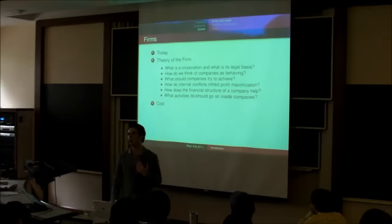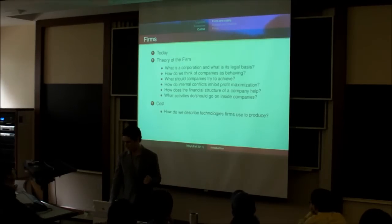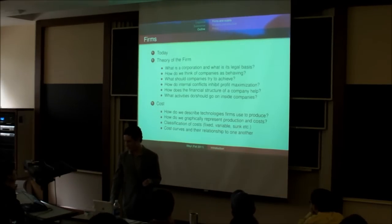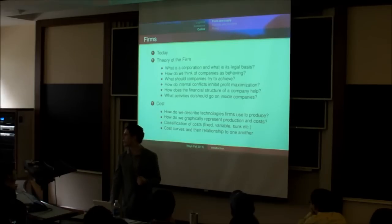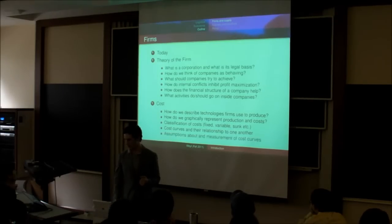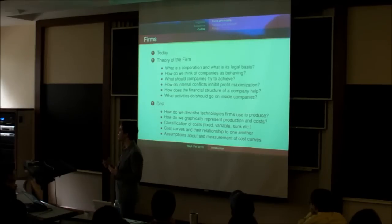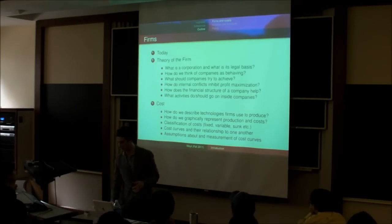We'll think about costs of production. How can we describe these mathematically? How do we graphically represent them? How do we classify them to fixed and variable sunk costs? What are cost curves and how are they related to one another? And what are standard assumptions that we make about cost curves? And how have in practice in the real world people actually measured them?